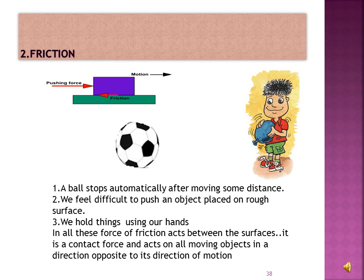Friction: a ball stops automatically after moving some distance. We feel difficulty pushing an object on a rough surface. A car or scooter comes to rest once its engine is switched off. A boat stops once you stop rowing. In all these cases, the force of friction acts between the surfaces. Friction is a contact force and acts on all moving objects in a direction opposite to their direction of motion.